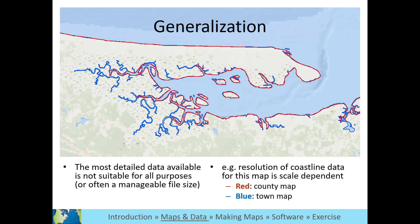In this example, the coastline outlined in red would be suitable for display on a county or state map. It would be difficult to see a lot of the small inlets and islands at that scale, so you would want something more generalized with less detail. The coastline outlined in blue would be suitable for a map of the town or something smaller, such as a specific bay or beach. More detail is often useful when mapping or analyzing a small area.